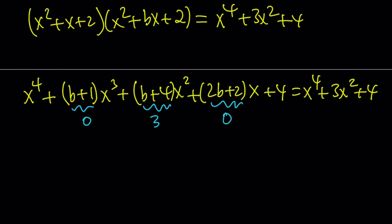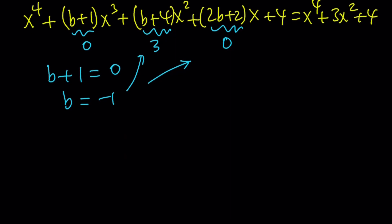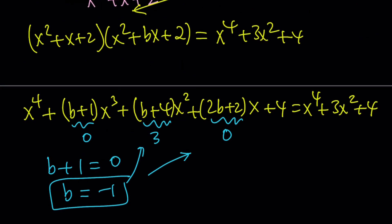So, even though we have a single variable, we have three equations, but they all mean the same thing. So let's just solve one of them. b plus 1 is equal to 0 gives us b equals negative 1. You can always check with these, because if they don't check, then this is inconsistent. That means it's not going to work.